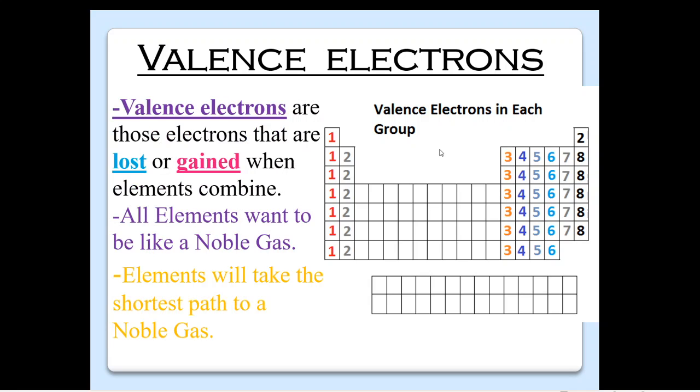So let's learn a little bit more about valence electrons and how this starts to form ions. This is the first step before bonding. Valence electrons are those electrons that are lost or gained when elements combine. So those ones on the very outside ring, those are the ones that either can be pulled off or where we can grab some more. And all elements, these are our popular kids on the block, our noble gases all the way on the right. Everybody wants to be like them. And so they're going to lose or gain electrons to become just like a noble gas. And they will always take the shortest path there.